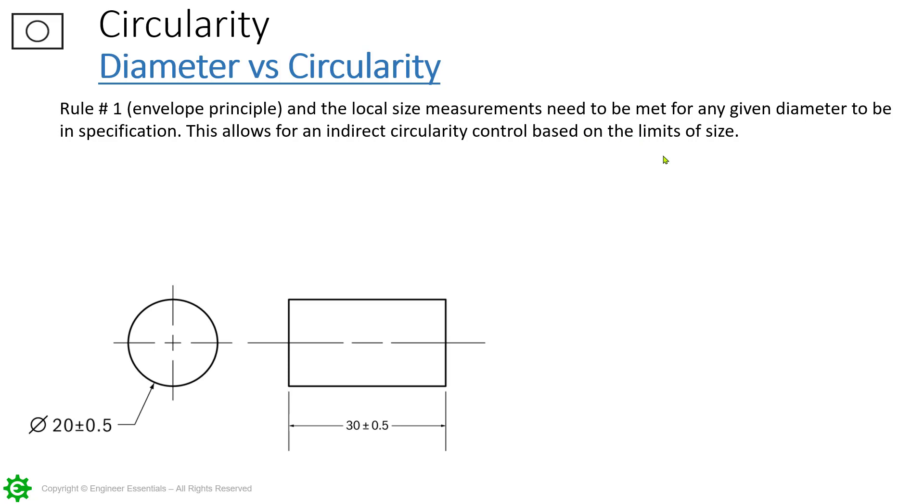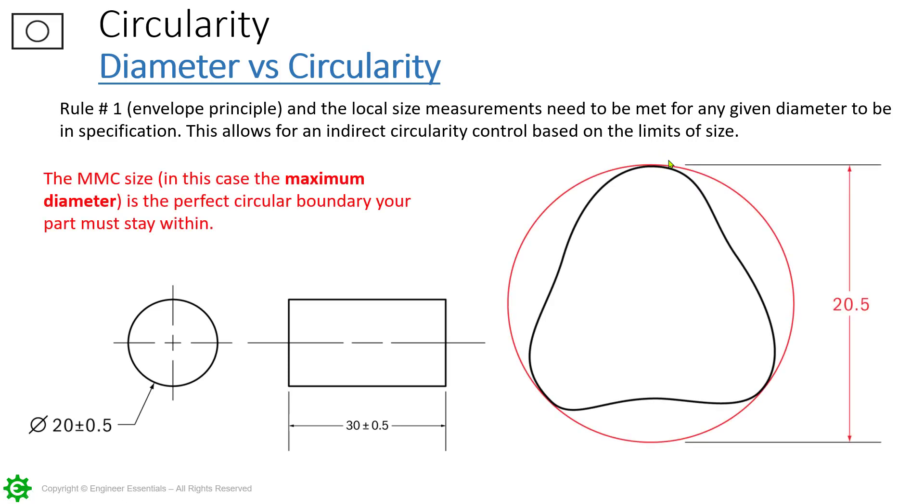If we pull this up, this is showing that MMC size, that is that envelope. Now it's two-dimensional but the actual go gauge that we would design for this would be three-dimensional. We wouldn't be trying to check it on a two-dimensional basis but this control for circularity is technically two-dimensional. Now that size dimension, 20 plus or minus 0.5, that does have straightness and cylindricity involved with that too. When it comes to these form controls that are built in by rule number one it's whatever is applicable, meaning what does the geometry look like. If it was a flat surface well then it would be straightness and flatness.